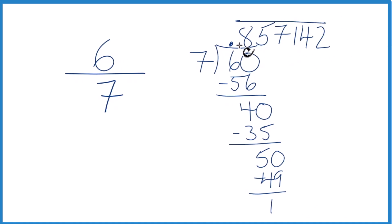You could round this to 0.86. So in answer to our question, the fraction 6 7ths equals the decimal 0.857142, and that number keeps repeating.